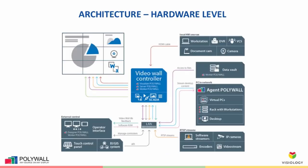Let's take a closer look at the design of a PolyWall-based video wall project. The installation consists of a video wall controller, operator machine, and other sources that we can display on the video wall via hardware or software — for example, workstations, cameras, video conference, IP cameras, video streams, files, BI or GIS systems.